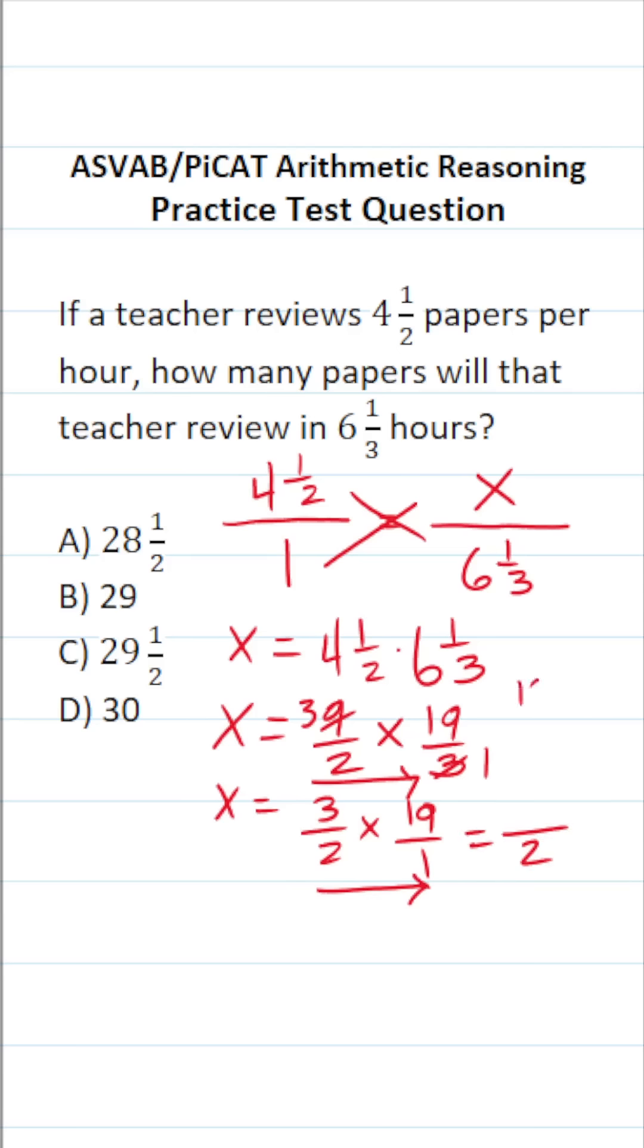So as not to make a mistake, I'm going to do that off to the side. We have 19 times three. Nine times three is 27. Bring down a seven, carry a two. Three times one is three plus two is five. So this is 57 over two.